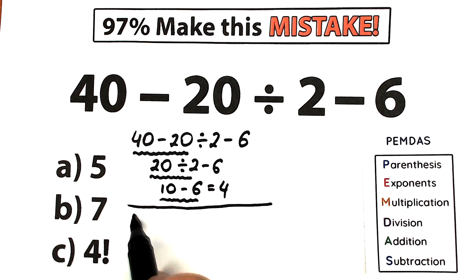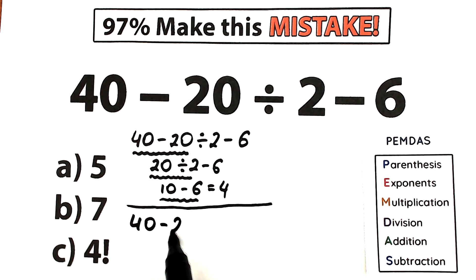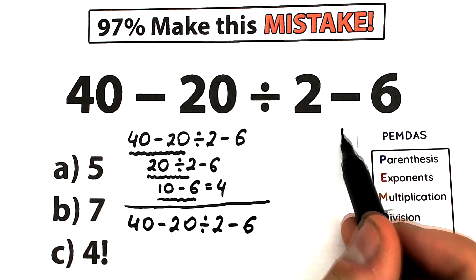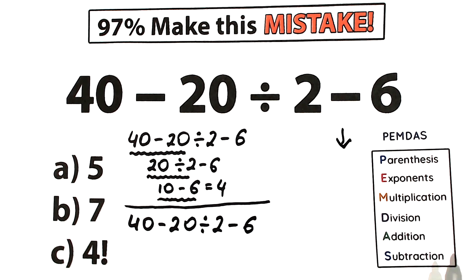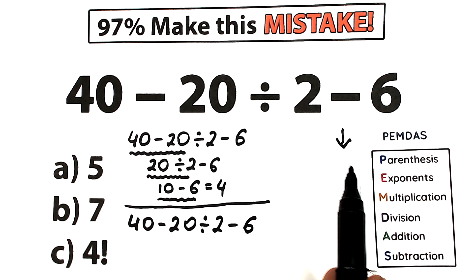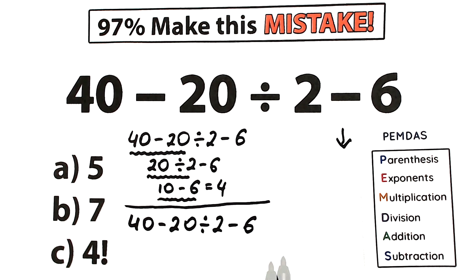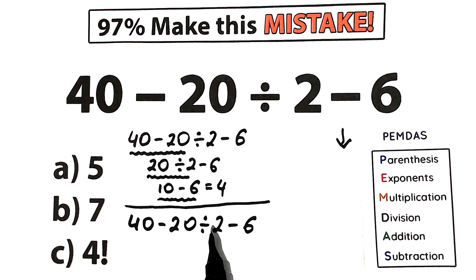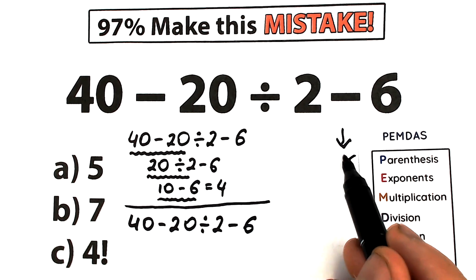We have our question: 40 minus 20 divided by 2 and minus 6. PEMDAS works from the top to the bottom and we go through the steps. The first step is parentheses. Looking at the expression, I don't see any parentheses, so we skip this part — we don't have any parentheses or brackets.